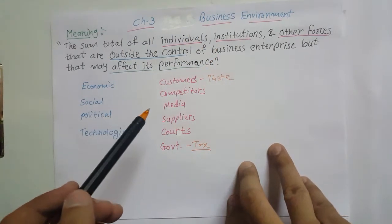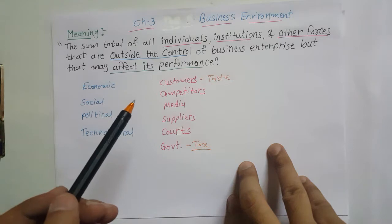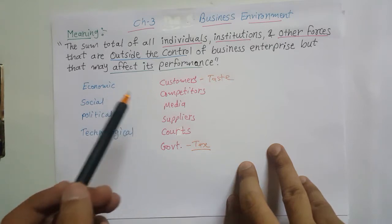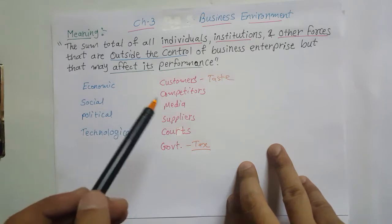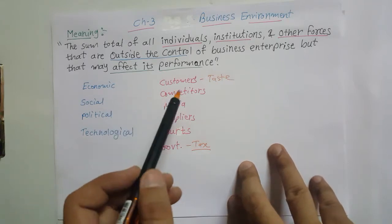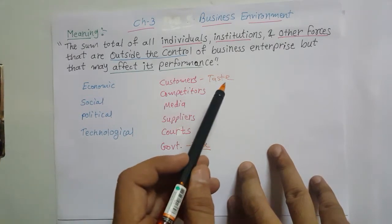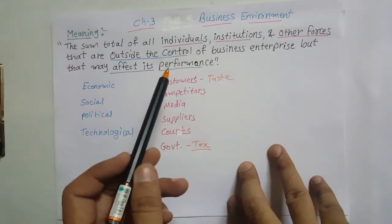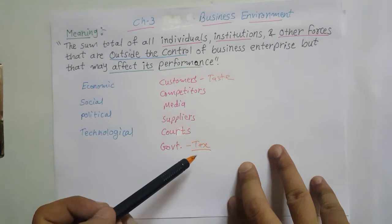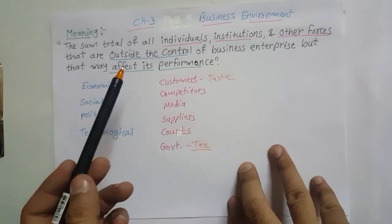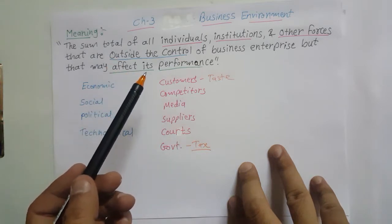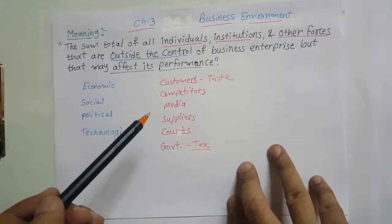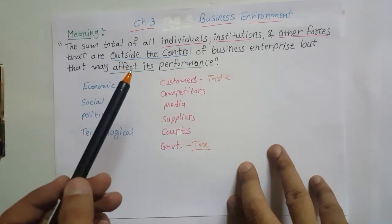In short, business environment means the things which are not in control of business, but they have an effect on business. For example, if customers' taste changes, there is a direct impact on our business. If the government changes tax, our business will be affected — and these things are not in control of our business, that's why they are part of business environment.